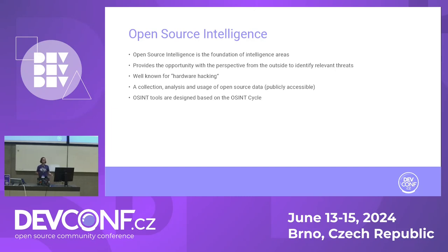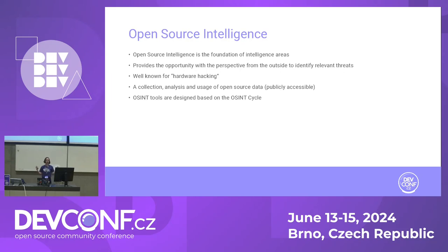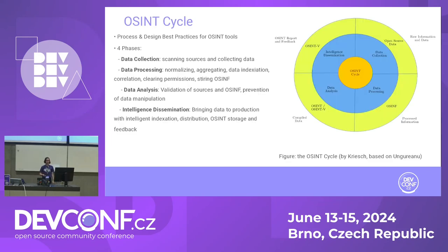Open source intelligence is defined as the foundation of multiple intelligence areas. It provides the opportunity to watch everything from the outside to identify relevant threats in our network. Some people also call it hardware hacking. You can collect, analyze, and use open source data — which is publicly accessible data from social media and anything else available publicly. OSINT tools are designed based on the OSINT cycle, which defines how a process to analyze open source data should be done.